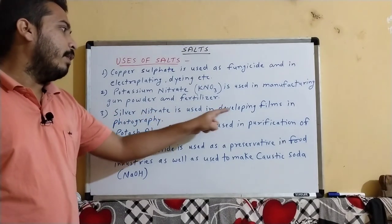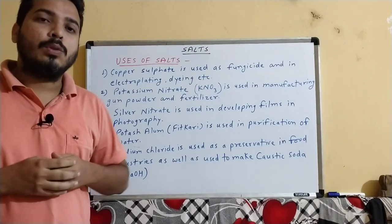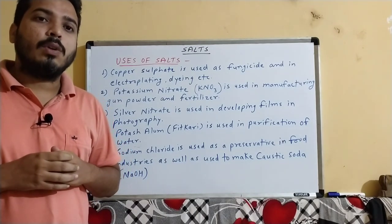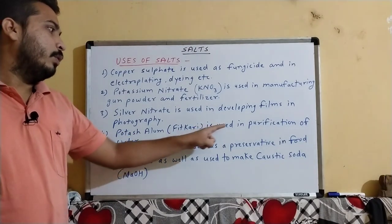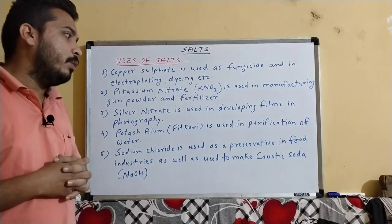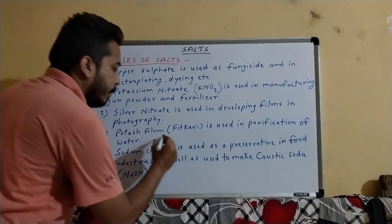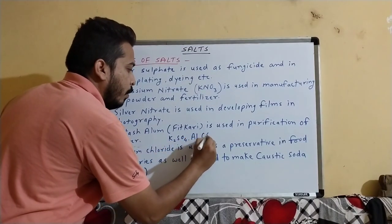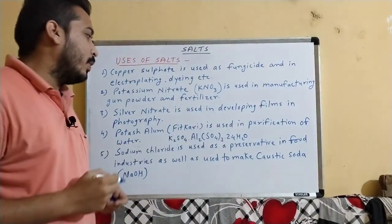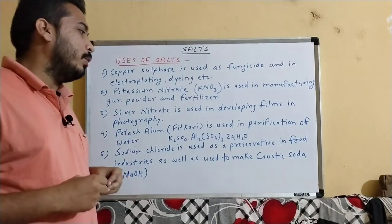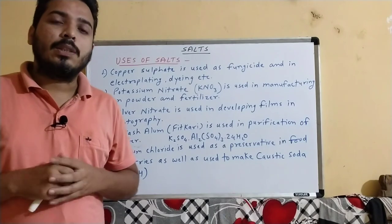Next, silver nitrate is used in photography and medicine. Potassium alum — a complex salt with formula K2SO4·Al2SO4·24H2O — is used in water purification. If water is impure or bad quality, we can clean it with potassium alum, which causes particles to settle out.